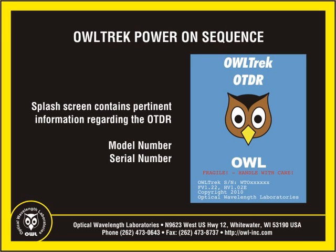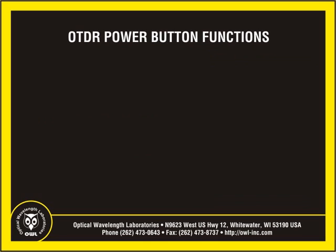Pressing the power button will turn on the OWLTREC OTDR. Initially, a screen will appear showing important information about the OTDR, including firmware version and serial number. While the power button is used to power on and off the OTDR device, it also has other functions while the OTDR is in use.